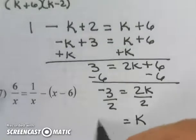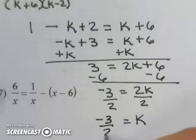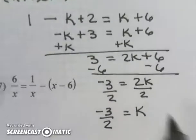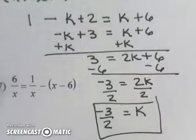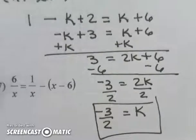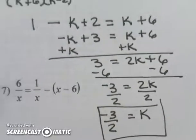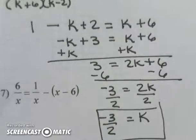So k equals negative 3 halves and that is the solution to my problem. This is our method for solving rational expressions.